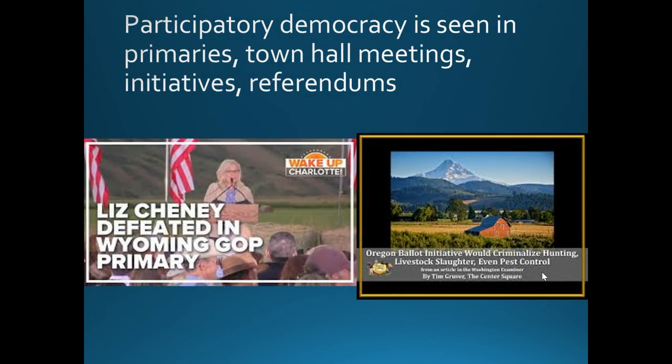A primary is an election to narrow down the candidates. If you're the Republican Party, you don't want to put up six Republicans against one Democrat — that won't work. Each party has primaries to narrow down the choices so you only have one candidate. Initiatives and referendums are laws that come from the people.